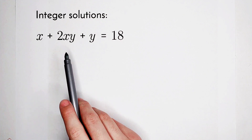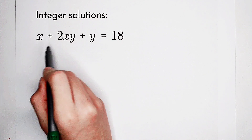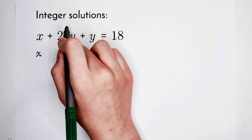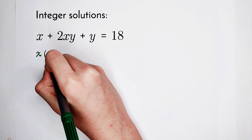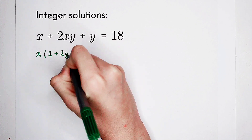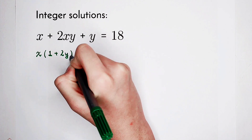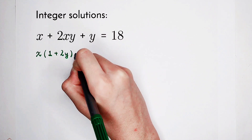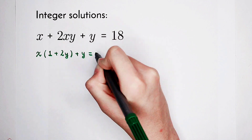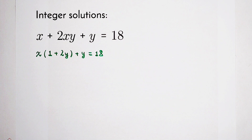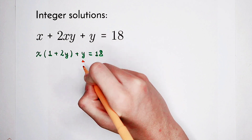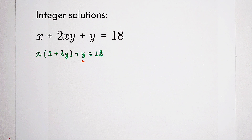So as our first step, we should take out an x from these two terms. What's in the bracket? 1 plus 2y. And here plus y. The right-hand side is 18. So now our problem is we cannot factorize the left-hand side directly, since this y is in the way. It's too ugly — we don't like it.